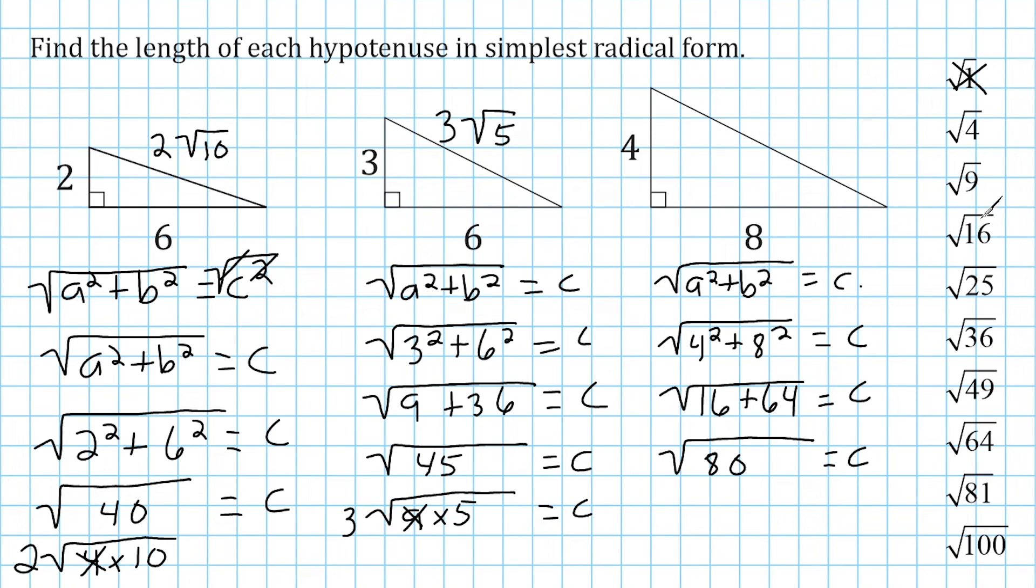Now, 16 is a perfect square. That is a factor of 80. As a matter of fact, 16 times 5 is equal to 80. So let's go ahead and take the square root of 16, which is our perfect square, and write that on the outside of our radical. That would be 4. So we would say that the length of this triangle's hypotenuse is 4 times the square root of 5.